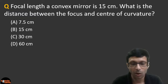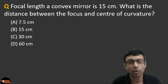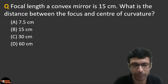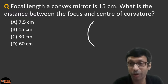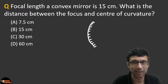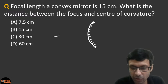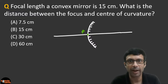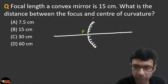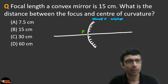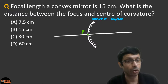Next question: the focal length of a convex mirror is given as 15 centimeters. What is the distance between the focus and the center of curvature? Always draw a diagram first. For a convex mirror, the center of curvature and the focus both lie on the right side — behind the mirror. The focus lies exactly between the pole P and the center of curvature C.